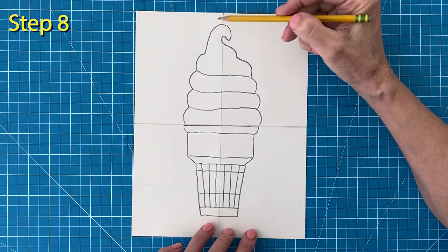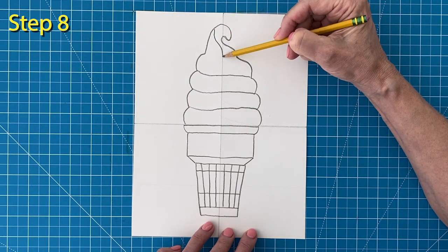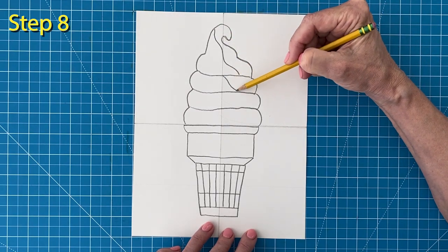Step number eight. Add the wavy line that goes down each layer as shown to show where the two flavors divide.